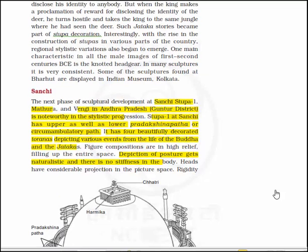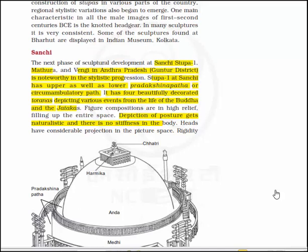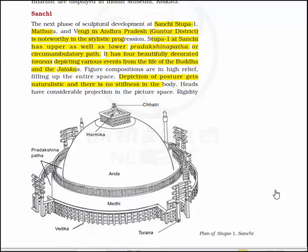Now let's read about the Sanchi Stupa. The next piece of cultural development at Sanchi Stupa 1, Mathura and Vengi in Andhra Pradesh (Gondu district) is noteworthy in stylistic progression. The first Stupa at Sanchi has an upper and lower Pradakshinapatha, or circumambulatory path, and it has 4 beautifully decorated Toranas depicting various events from the life of Buddha and the Jatakas. Figure compositions are in high relief filling up the entire space, depiction of posture gets naturalistic, and there is no stiffness in the body. Heads have considerable projection in the picture space.